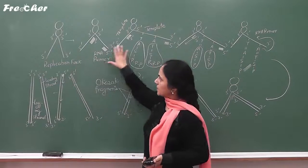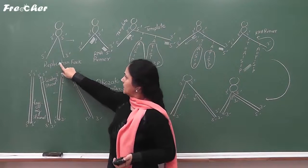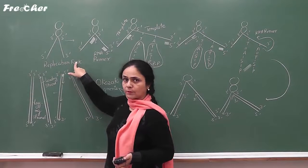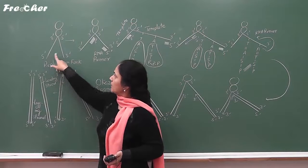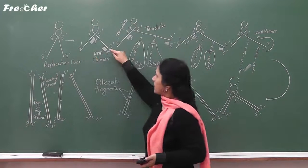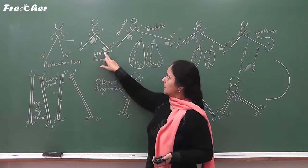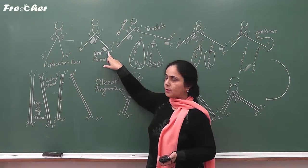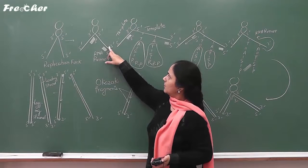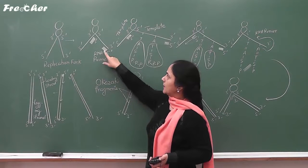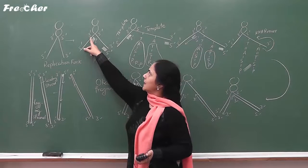First of all, there is formation of a replication fork where two strands of DNA separate from each other. Then, a molecule of RNA which is known as RNA primer joins at the 5' end of the new strand, present opposite to the 3' end of the template strand. So, one RNA primer is formed on this template and another RNA primer is formed on the second template.